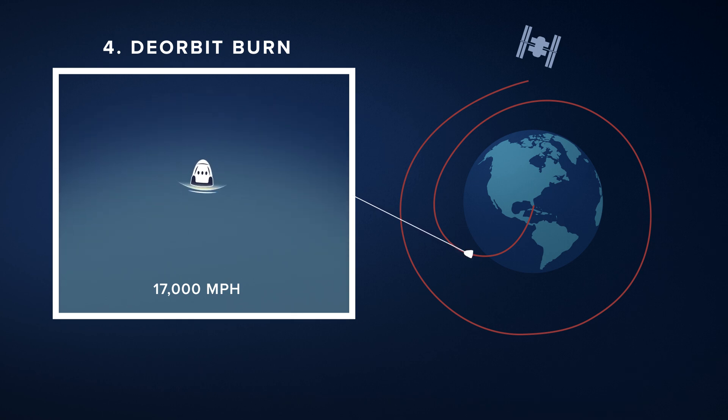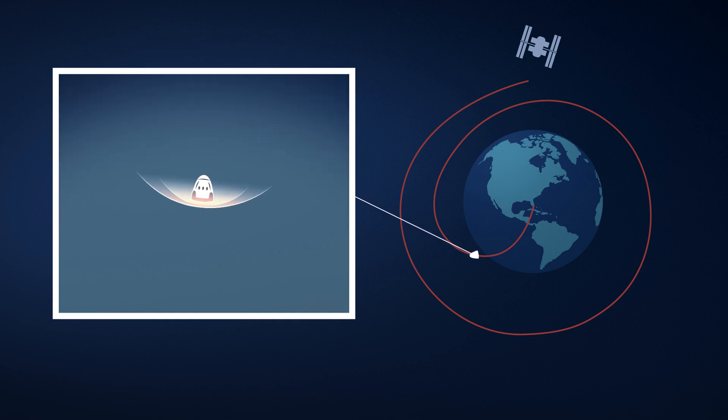Now, the particles in the atmosphere will cause Dragon to slow down, but will also heat the outside of the spacecraft to over 5,000 degrees Fahrenheit.